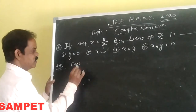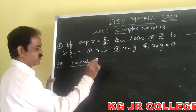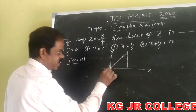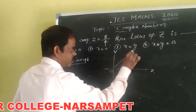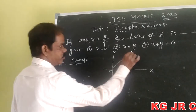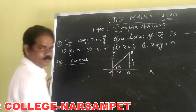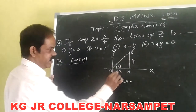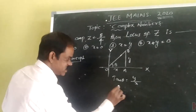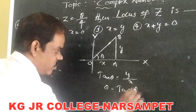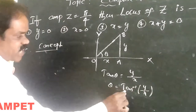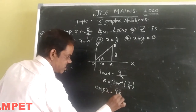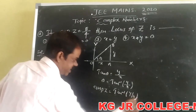Here is the concept for solving this problem. Let us consider the x-axis and y-axis. Taking a point, from O to A the distance is x, and from A to B the distance is y. Let the angle be theta. According to trigonometry, tan theta equals opposite side over adjacent, that is y over x. So theta equals tan inverse of y over x. This theta — tan inverse of y over x — is the amplitude of z.